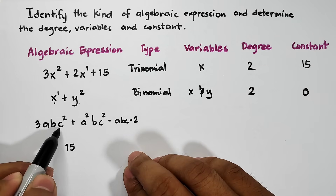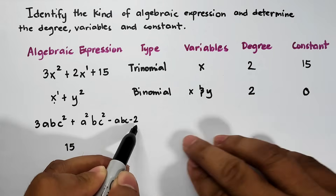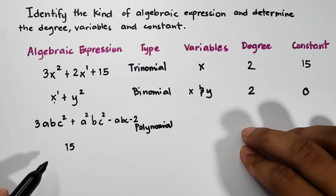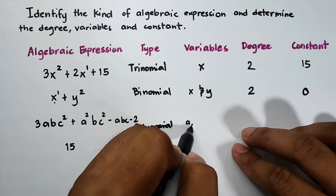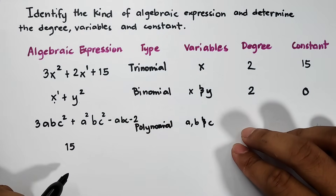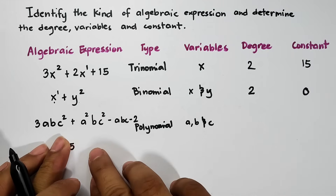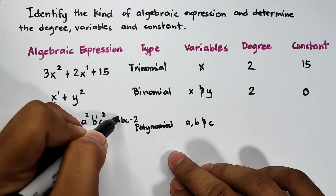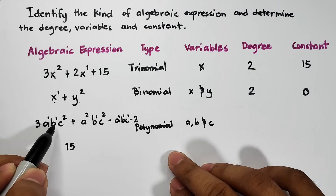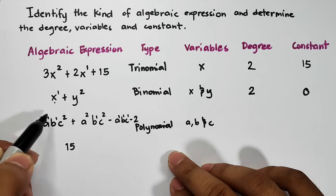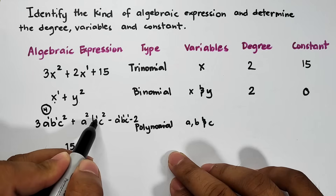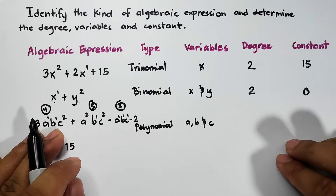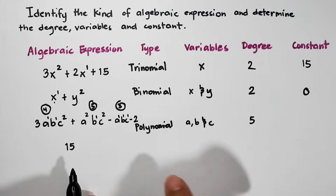For the next expression, counting the terms — 1, 2, 3, and 4 — this one is a polynomial. The variables are A, B, and C. For the degree, since each term has multiple variables, we add the exponents per term. First term: 1+1+2 = 4. Second term: 2+1+2 = 5. Third term: 1+1+1 = 3. Comparing these, the greatest is 5, so the degree is 5. The constant is negative 2.